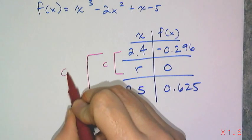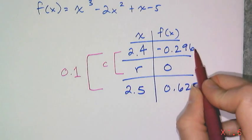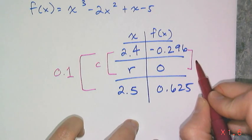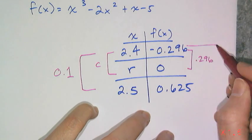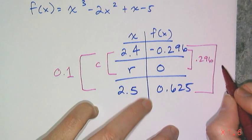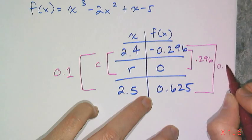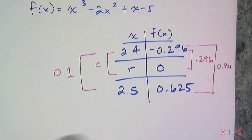This unknown value of c, this unknown value of 0.1, this value of 0.296—and be careful of the sign, make sure you don't mess that up—and then this value of 0.921. So I set up my ratios.